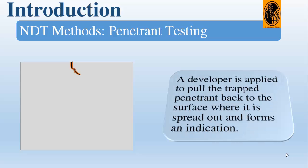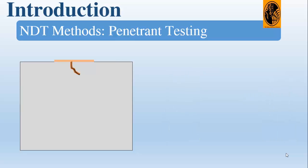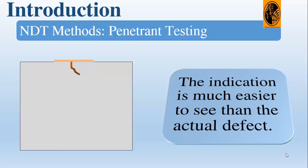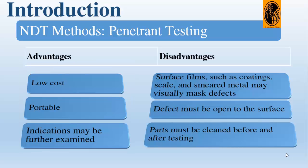Then the excess penetrant is cleaned from the surface. After that, we apply a developer. The purpose of the developer is to pull out the trapped penetrant back to the surface. Here is the developer, and then the excess penetrant is pulled out and we can see the indication.